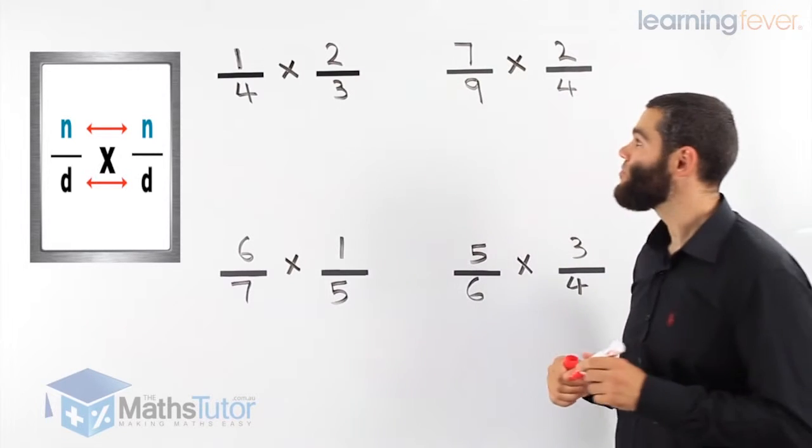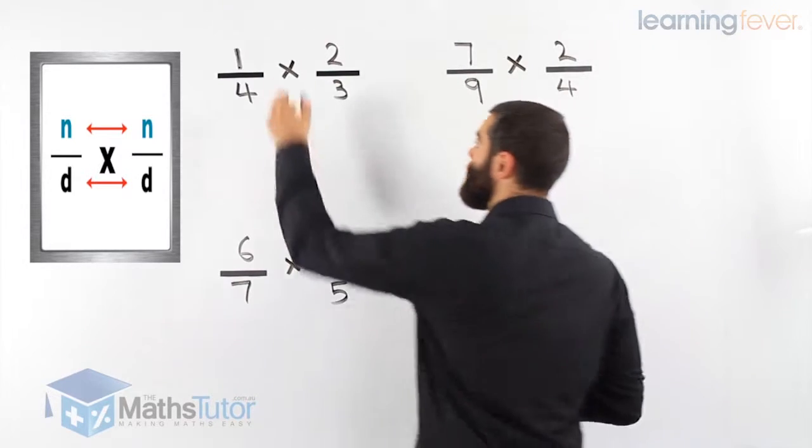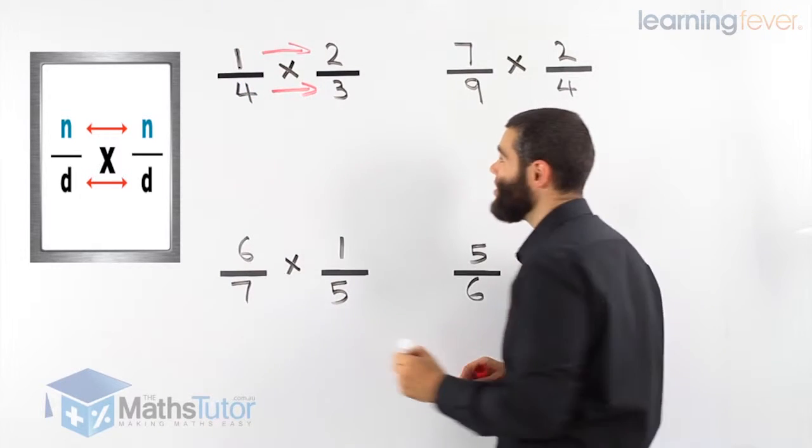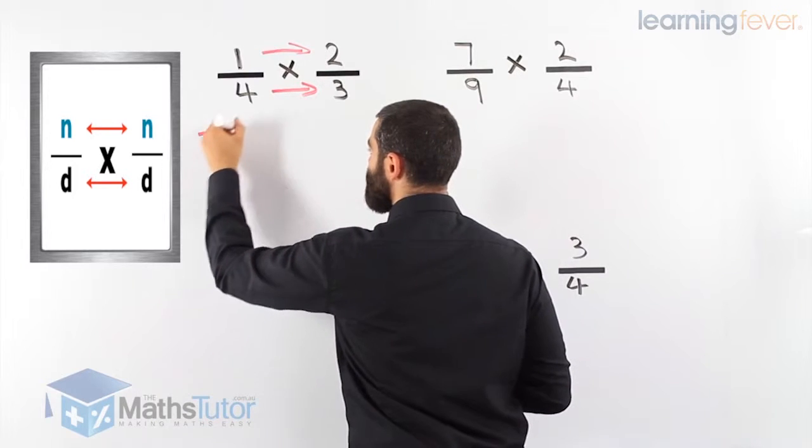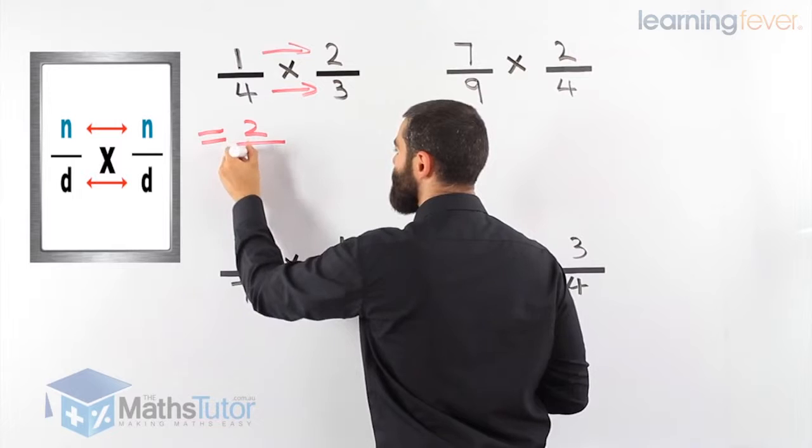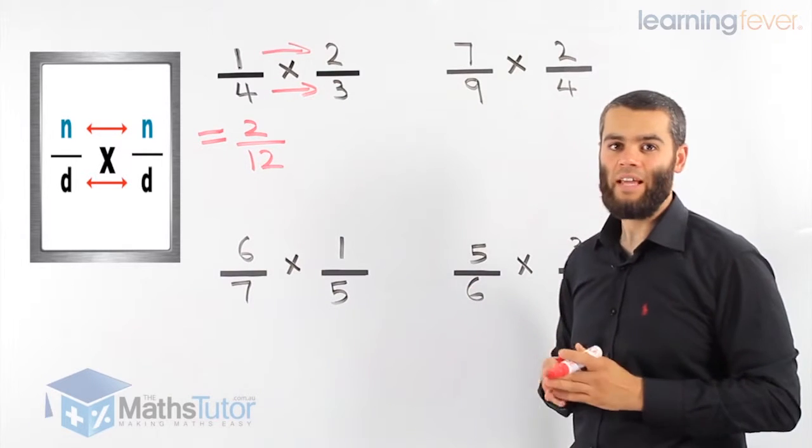One quarter times two thirds. Well, numerators times each other. I like to show arrows as my working out. One times two is two. Four times three is twelve. We've just done that.